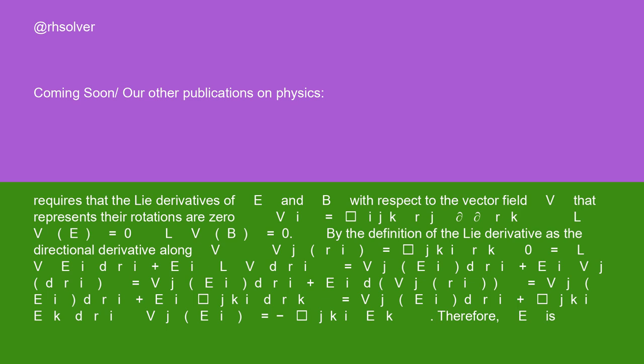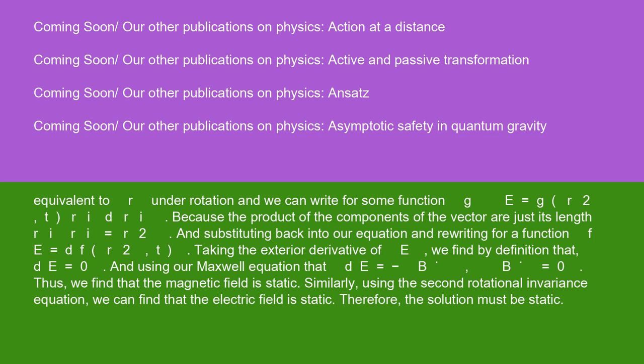Therefore, E is equivalent to r under rotation, and we can write for some function g equals g(r², t) r_i dr^i. Because the product of the components of the vector are just its length, r_i equals r². And substituting back into our equation and rewriting for a function f, E equals df(r², t). Taking the exterior derivative of E, we find by definition that dE equals zero, and using our Maxwell equation that dE equals minus B, B equals zero. Thus, we find that the magnetic field is static. Similarly, using the second rotational invariance equation, we can find that the electric field is static. Therefore, the solution must be static.